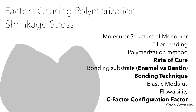Although we were able to address the major problem of composite shrinkage, factors that affect polymerization shrinkage include the molecular structure of the monomer — for example, Bis-GMA or UDMA shrink less compared to TEGDMA. Other factors include the amount or type of filler: greater filler means lesser shrinkage, and vice versa. The rate of cure is another important factor in overcoming the stresses generated within the cured material.